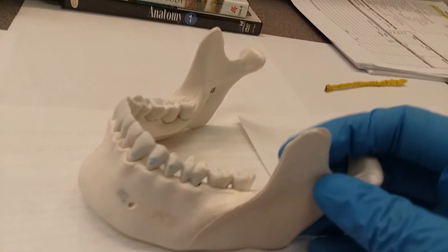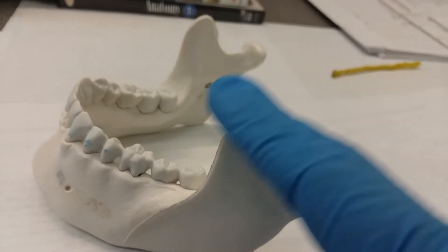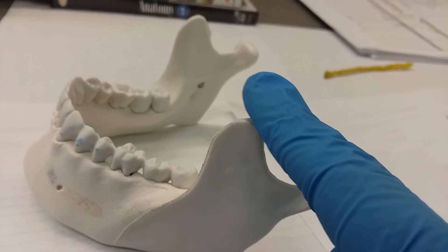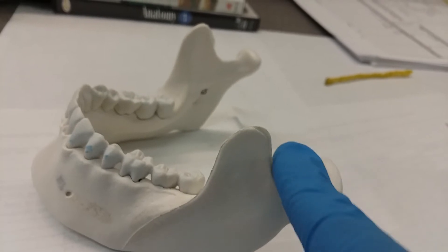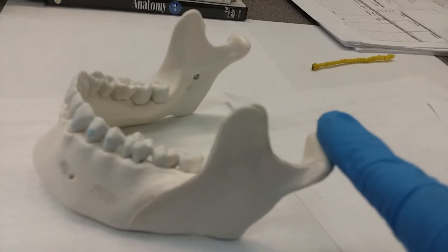We're going to have our coronoid process. That's this little ridge right here, this kind of little pokey bit. Then we're going to have our mandibular notch. Again, it's right by the mandibular condyle, between the coronoid process and the mandibular condyle.